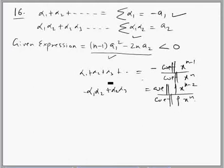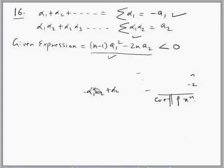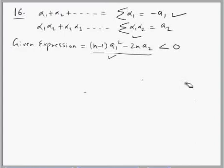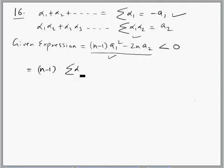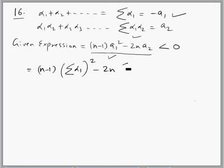Now I replace the values of a₁ and a₂ in the given expression to get an idea of the roots. a₁ is minus σα₁, so minus squared will become positive. And 2n times a₂, where a₂ is σ(α₁α₂). So I have changed the form of the given expression and written it in this new way.